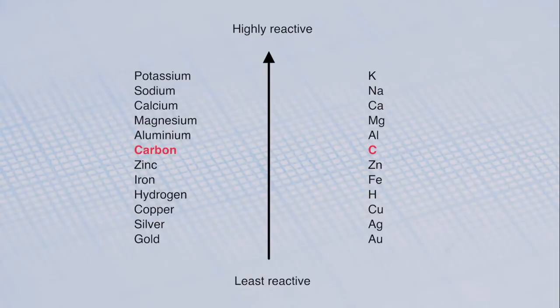Here is the reactivity series. Highly reactive metals above carbon cannot be obtained by metal extraction. Instead they are obtained by a process known as electrolysis. This is the decomposition of a substance using electricity.